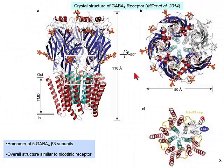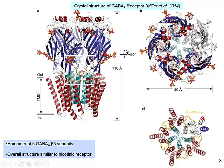Until about a year and a half ago, I had to talk by analogy with nicotinic receptors, at which point the crystal structure of a GABA-A receptor was published — a very exciting observation. A GABA-A receptor looks pretty much like an acetylcholine receptor at this level of resolution. It has an extracellular portion consisting mostly of beta strands where the transmitter binds.